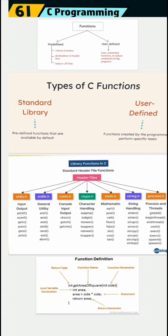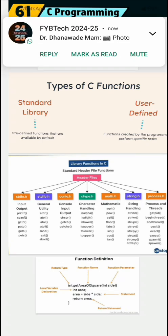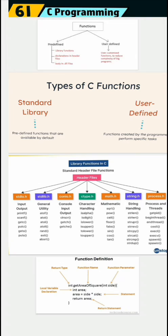Function definition example: int getAreaOfSquare — int is the return type, getAreaOfSquare is the function name, and int size is the function parameter. Inside, int area is a local variable declaration. The function contains statements and ends with a return statement returning area.